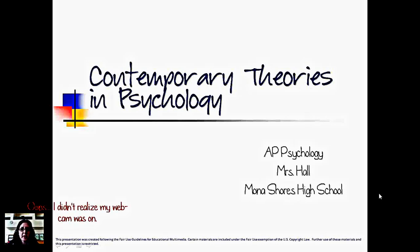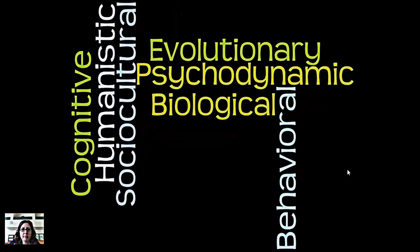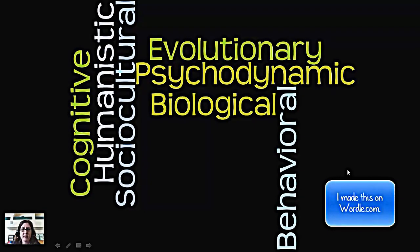Hello. Today we're going to talk about contemporary theories in psychology. These are the seven different approaches or theories about why we do the things that we do. They are listed here for you in no particular order.